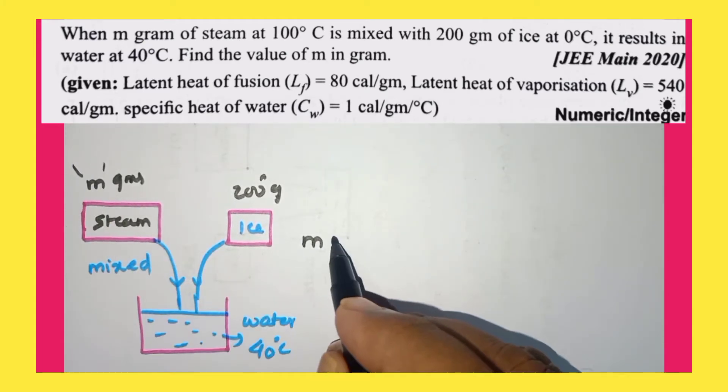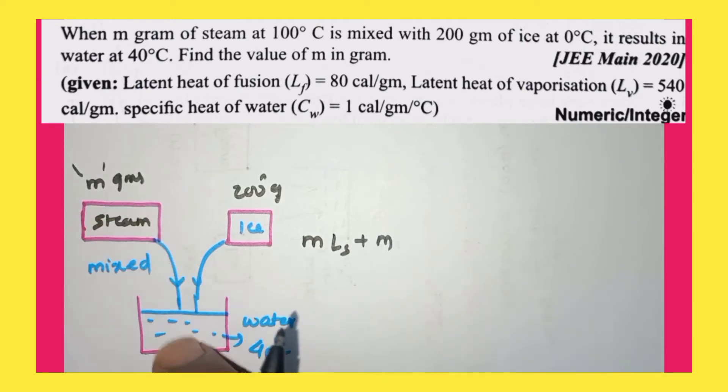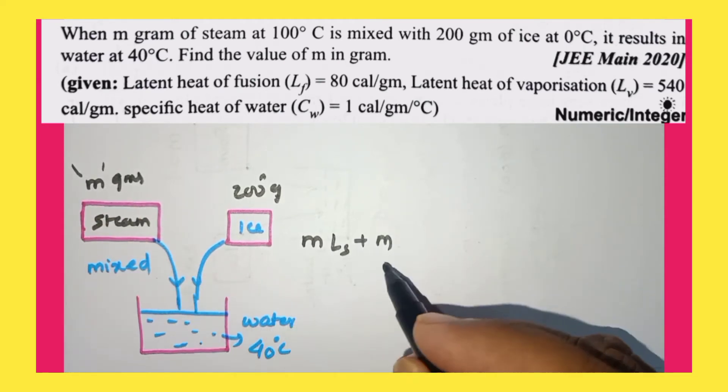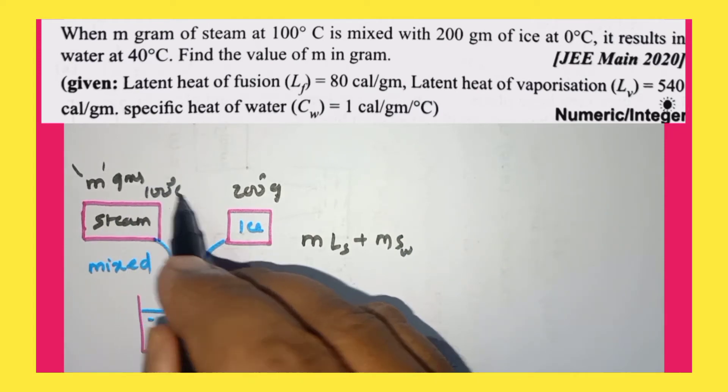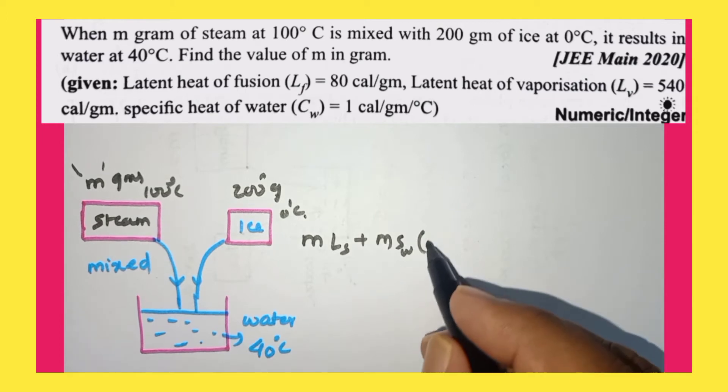Plus mass of water which is converted into water - mass of steam which is coming to water is m, specific heat of water, and change in temperature. Steam will be at 100 degrees Celsius, ice will be at 0 degrees Celsius, so it is converted from 100 to 40, so 100 minus 40.